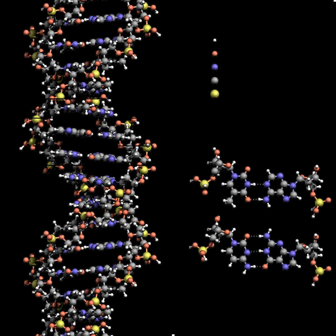A polymer comprising multiple linked nucleotides, as in DNA, is called a polynucleotide. The backbone of the DNA strand is made from alternating phosphate and sugar residues. The sugar in DNA is 2-deoxyribose, which is a pentose sugar.